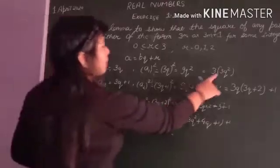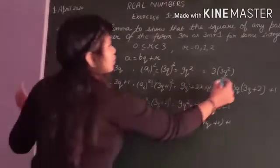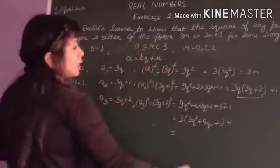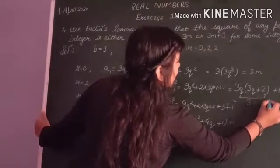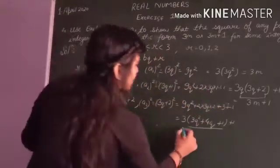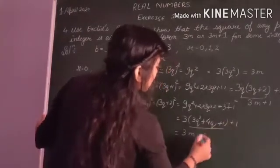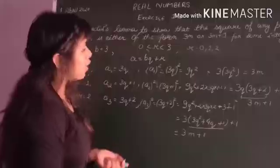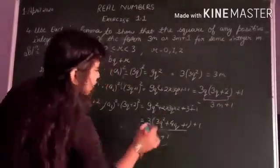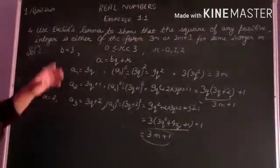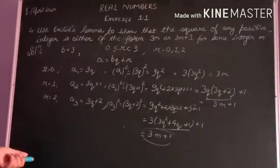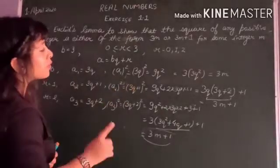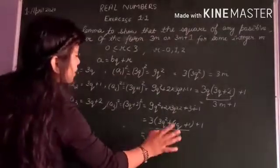Now for a1 square, 3 into 3q square, we can substitute m in place of 3q square. Here also in place of this bracket we are keeping m. So see, in the result of a1 square, a2 square, and a3 square, we have the form of 3m and 3m plus 1. Now a3 square is also we have got in the form of 3m plus 1.